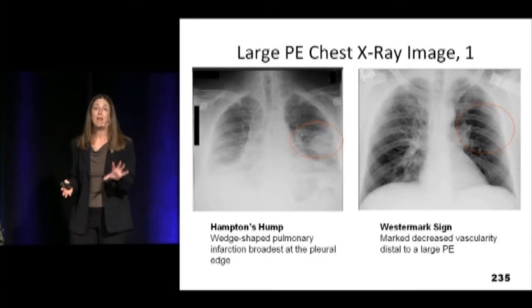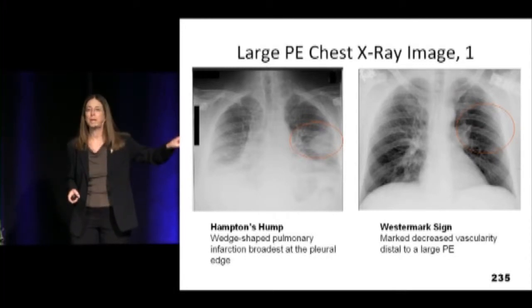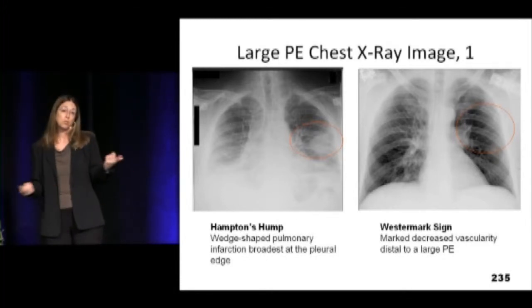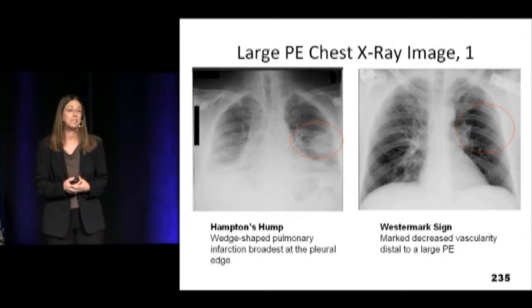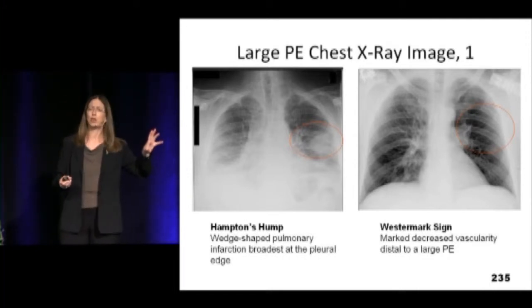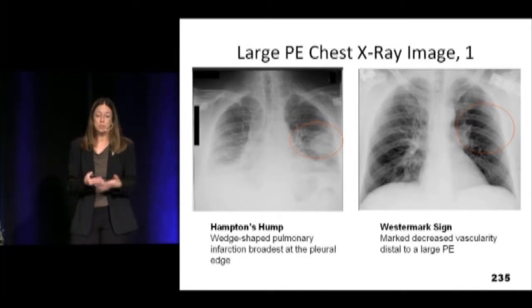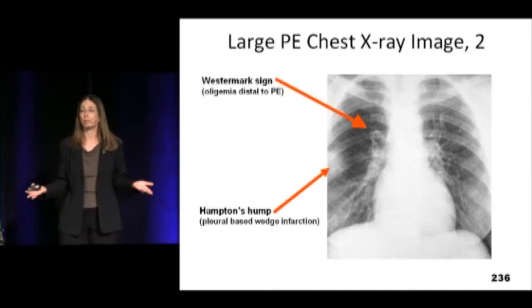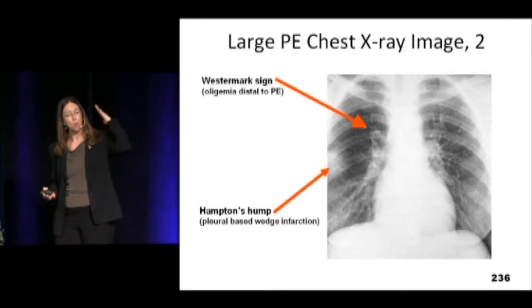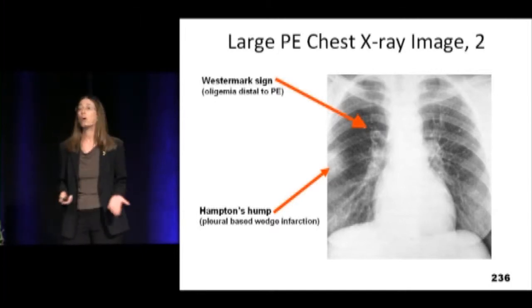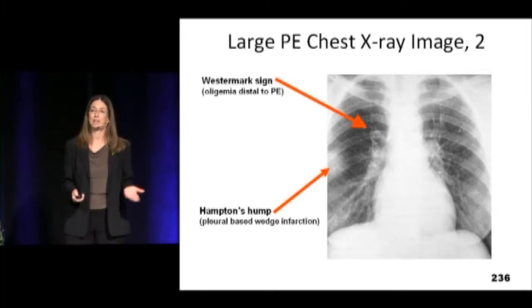You may see things like Westermark sign and Hampton's hump, but the reality is if you see these, that's the day you want to be in Vegas — they're incredibly rare. These were described back when we didn't have sophisticated imaging. Hampton's hump is basically where the infarct of the lung occurred; Westermark sign is where there's oligemia distal to where the clot is sitting. You hardly ever see these things.